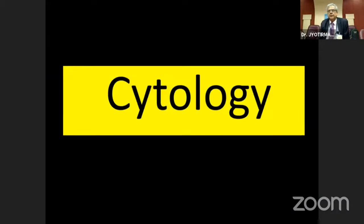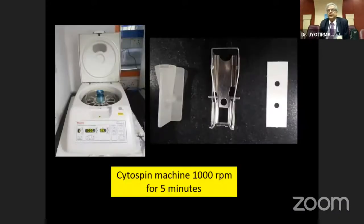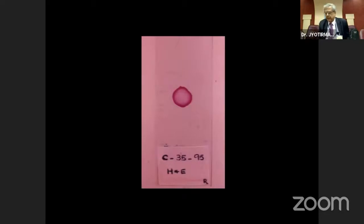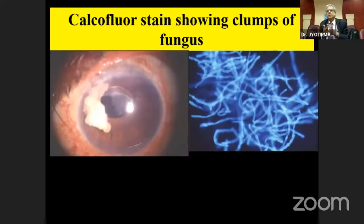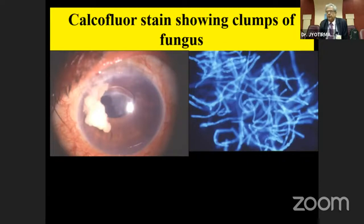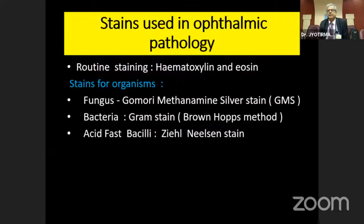Cytology is quite important. We perform a cytospin — the fluid is put in a cassette and then into the cytospin machine at 1,000 revolutions per minute for five minutes. We get a concentrated smear showing elegant cytopathology. For example, this is an exudative mass in the anterior chamber found to be fungus by calcofluor white or KOH-calcofluor staining.